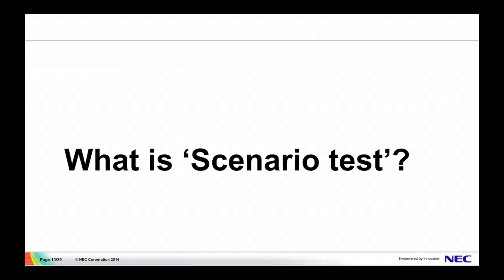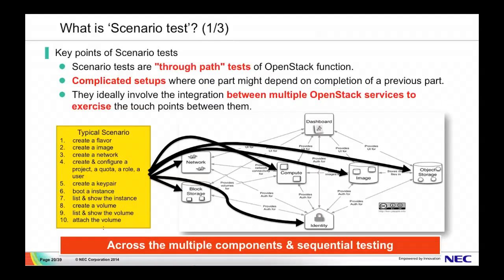I'd like to talk about the overview of Tempest scenario tests. Scenario tests are throughput tests of OpenStack functionality. It's a complicated setup where one part might depend on the completion of the previous part. They ideally involve integration between multiple OpenStack services and components to exercise the touch points between them. The key point is that multiple components and sequential testing define a scenario test.